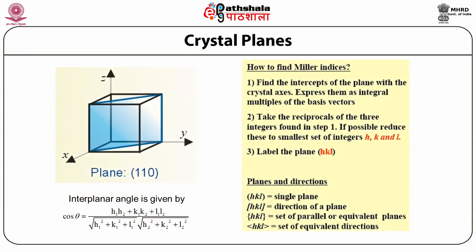What are Miller indices and how do we find them? Miller indices form a notation system in crystallography for planes in crystal Bravais lattices. A family of lattice planes is determined by three integers h, k, and l — the Miller indices, also written as (h k l).